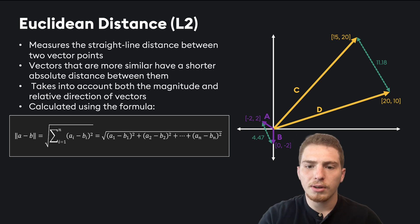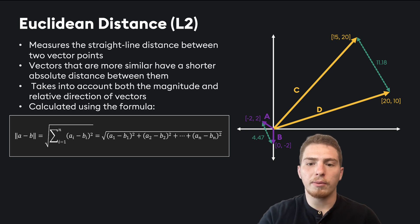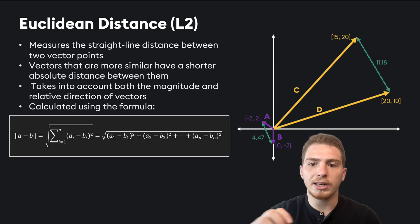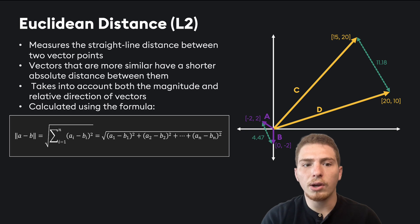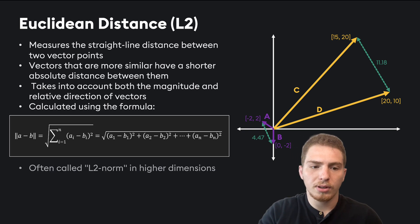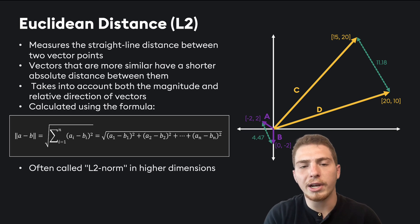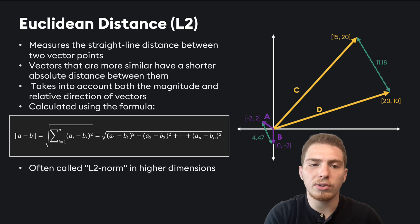Here on the right we see four vectors A, B, C, and D. Even though C and D are much closer to each other than A and B in terms of angle, they are much farther apart in terms of Euclidean distance because it takes into account not only the relative direction, but also the magnitude. In higher dimensions, it's often called L2 norm, so when creating our database schema we're going to call this L2.